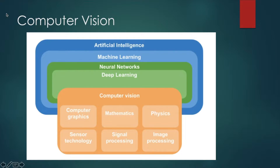Computer vision is a subset of artificial intelligence. Within artificial intelligence there also exists machine learning, and within machine learning there is deep learning. In deep learning there is a complex network of neurons — artificial neural networks. Within this we have a subset of computer vision which deals with computer graphics, mathematics, physics, sensor technology, signal processing, and image processing.